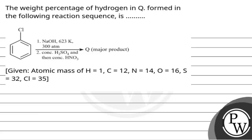Hello, let's read the question. The question says the weight percentage of hydrogen in compound Q formed in the following reaction sequence: we have chlorobenzene, and we react it with NaOH at a temperature of 623 Kelvin, pressure of 300 atm, in the presence of concentrated H₂SO₄ and then concentrated HNO₃ to get the major product Q. Given atomic masses: H = 1, C = 12, N = 14, O = 16, S = 32, Cl = 35.